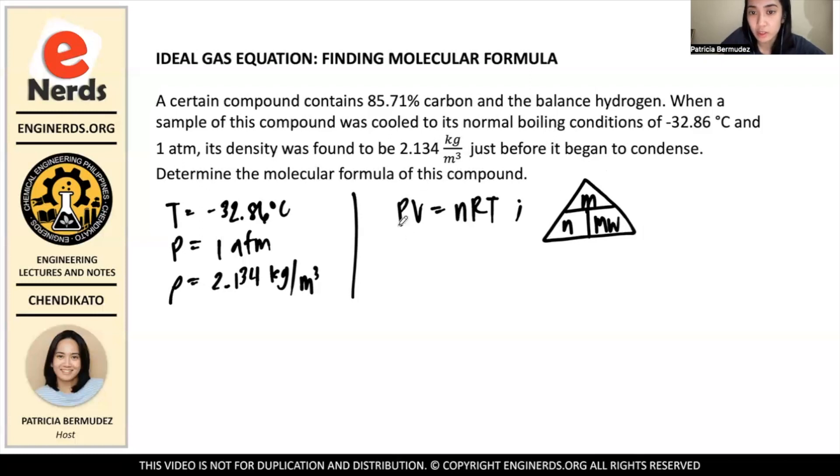And in this equation, what is present here? We have n, right? So how are we going to represent n using m and molecular weight? In this triangle here, this line represents division and this line represents multiplication. So to get n, we have mass divided by the molecular weight. So the next step that we're going to do is substitute this here in this ideal gas equation. So PV = mass/MW × RT.